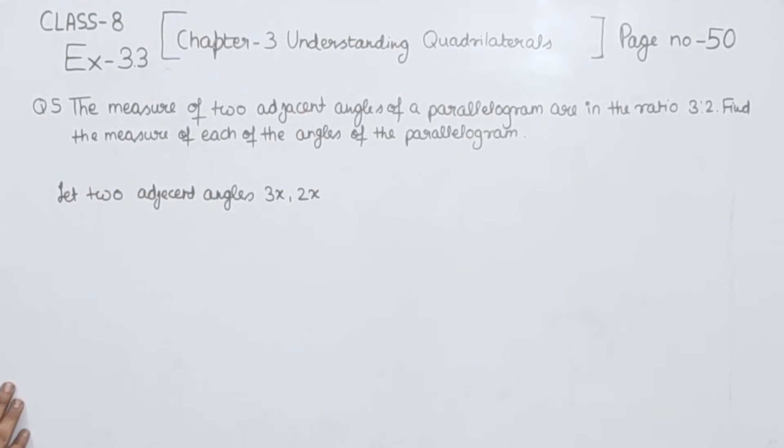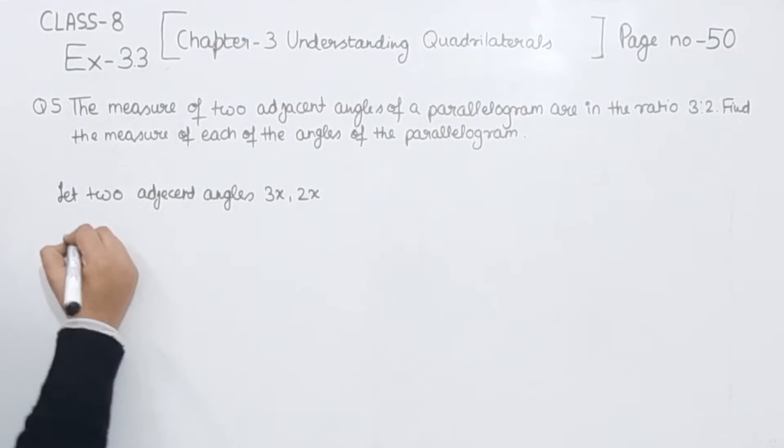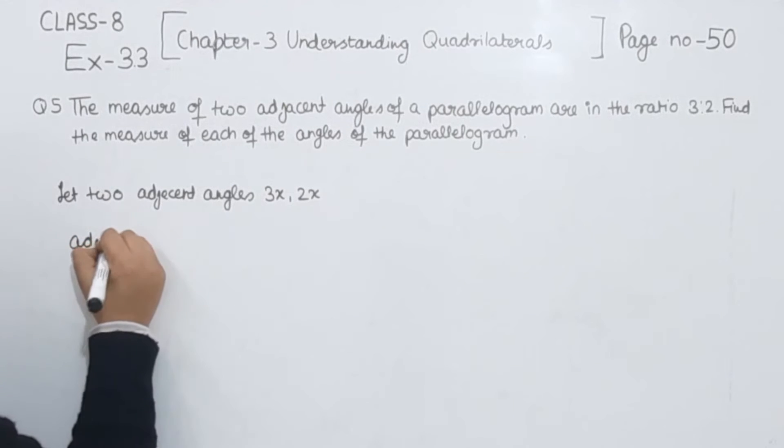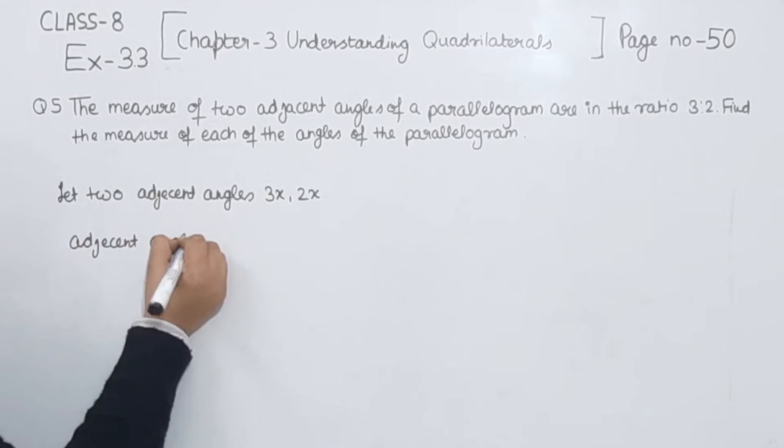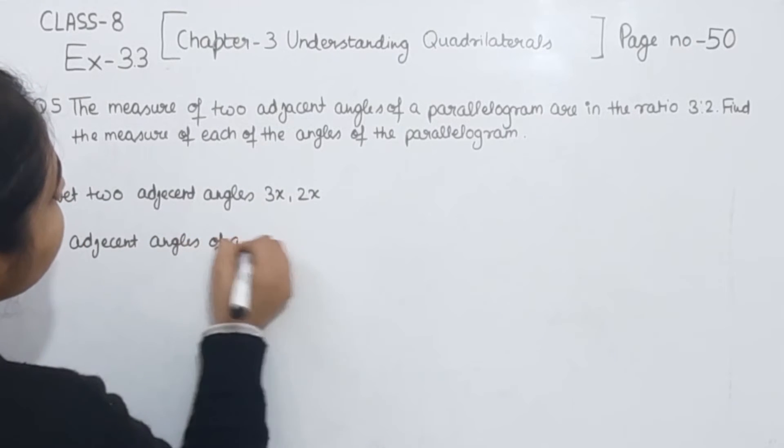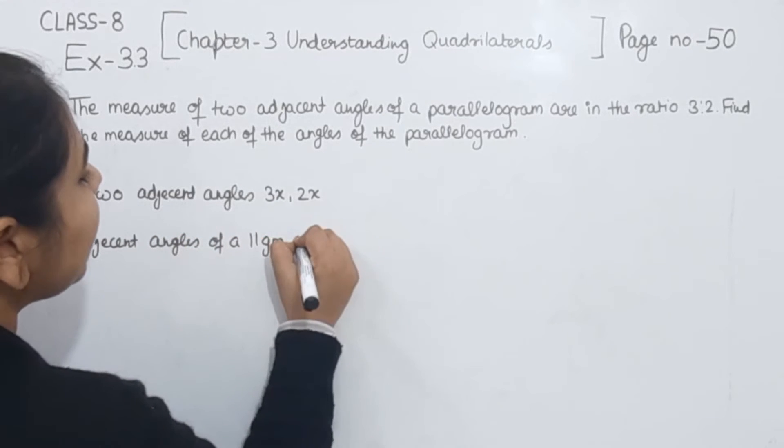These are the two adjacent angles we are having. Now we know that the adjacent angles of a parallelogram are supplementary.